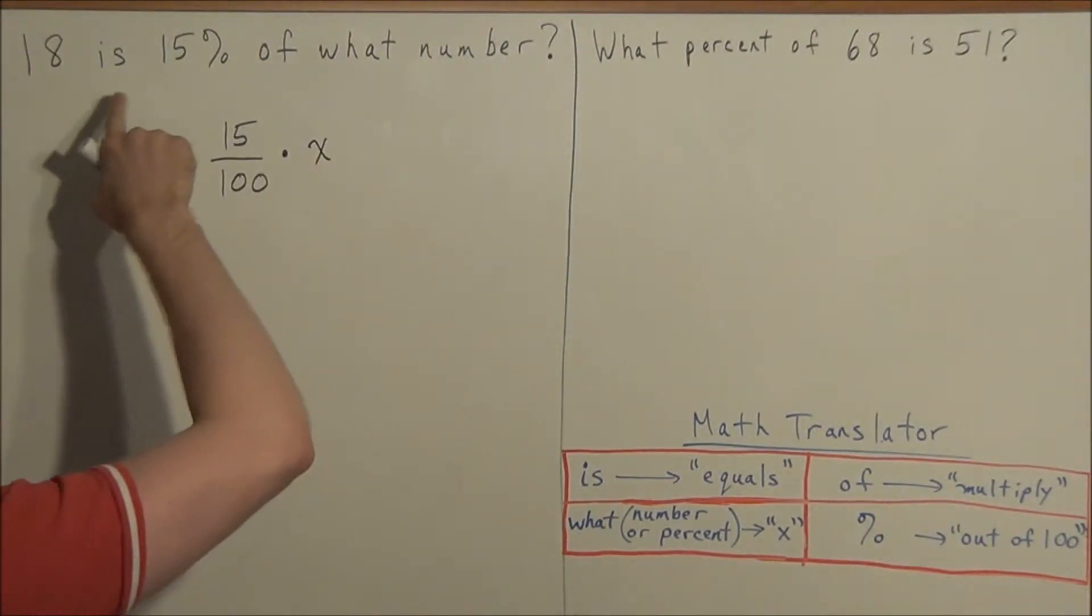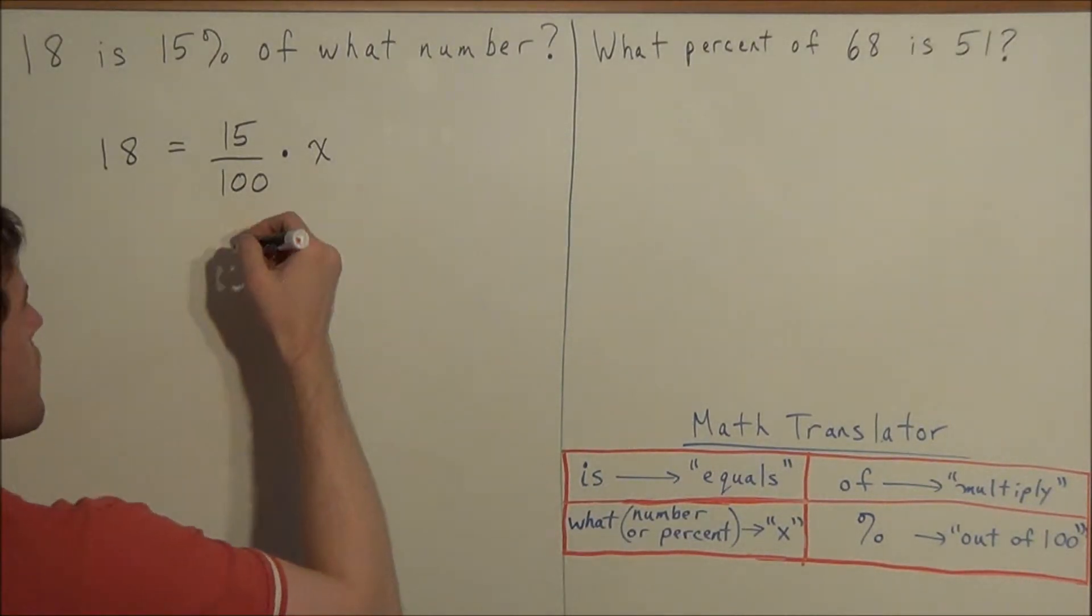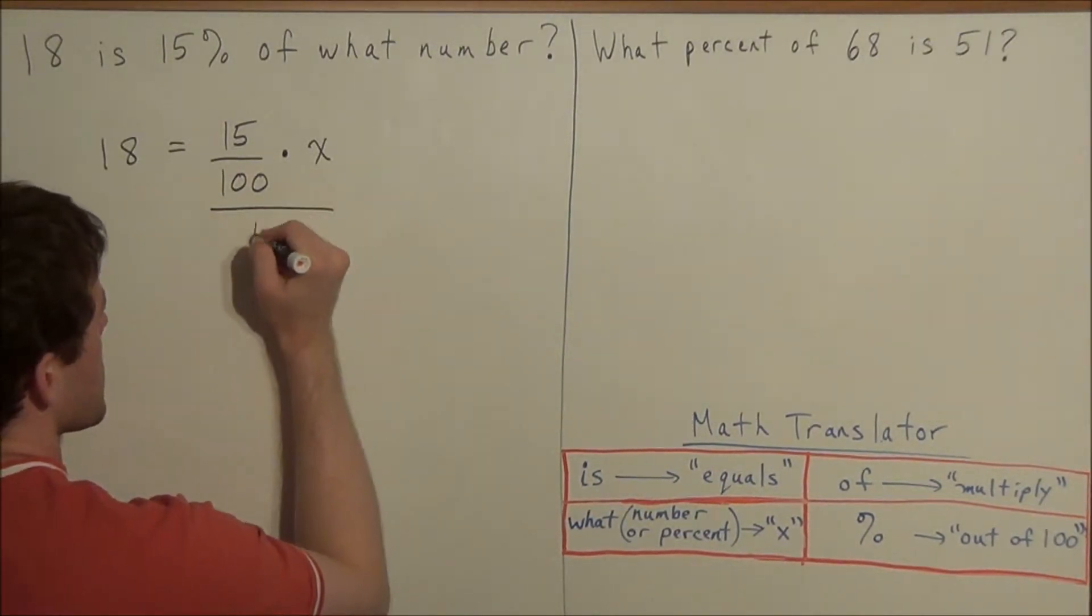So now we translate 18 is 15% of what number to 18 equals 15 over 100 times x. And now to solve for x, all we need to do is divide both sides by 15 over 100.